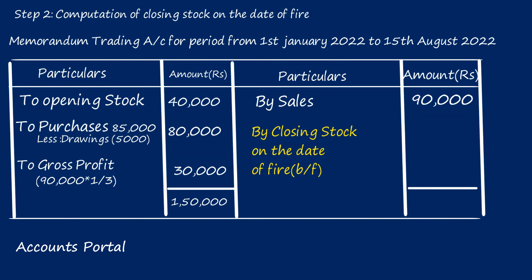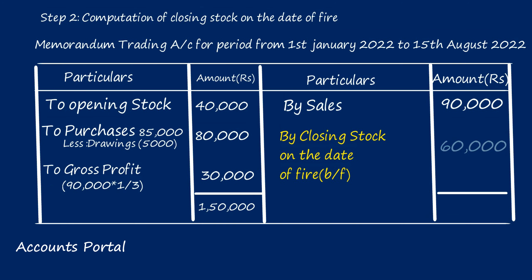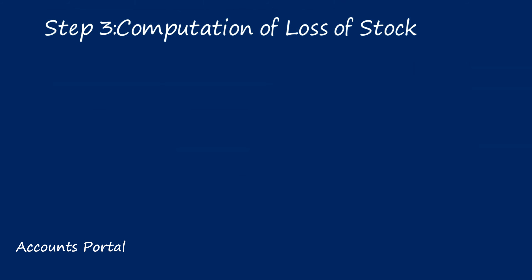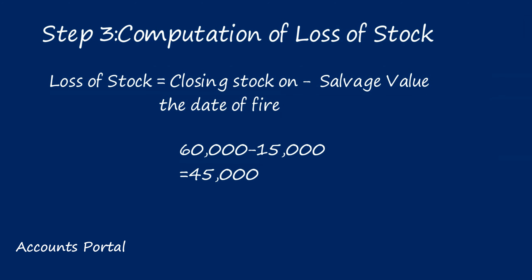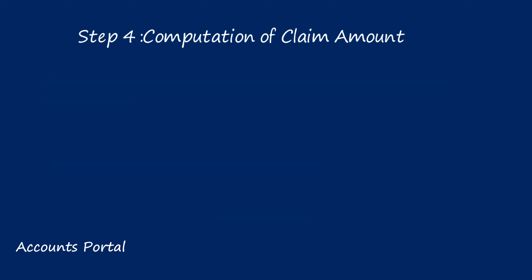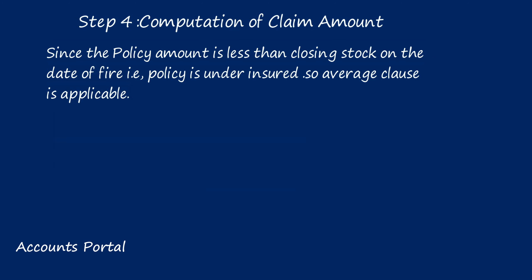Step 3: computation of loss of stock. Closing stock on the date of fire minus salvage value: ₹60,000 − ₹15,000 = ₹45,000. Step 4: computation of claim amount. Before computing the claim, we check whether the policy is underinsured, overinsured, or equally insured. We compare the policy amount with closing stock on the date of fire — not with loss of stock. Closing stock on date of fire is ₹60,000 and policy amount is ₹50,000. Since policy amount is less, it is underinsured, so the average clause applies.